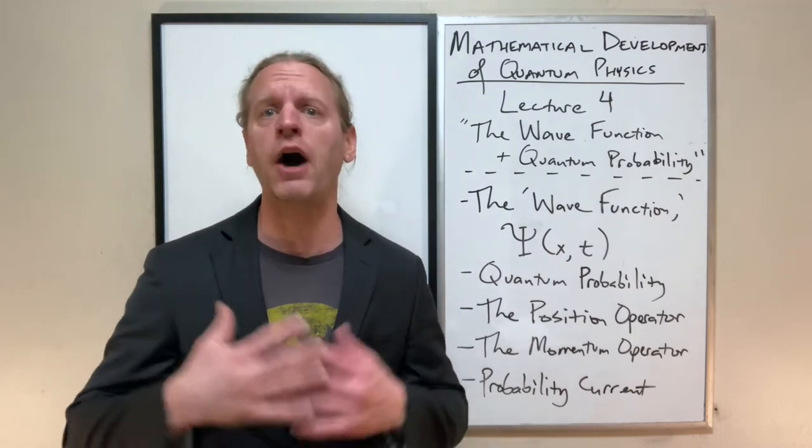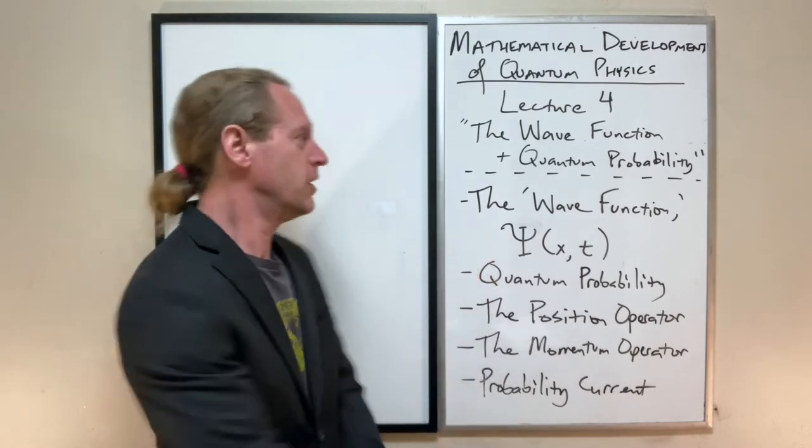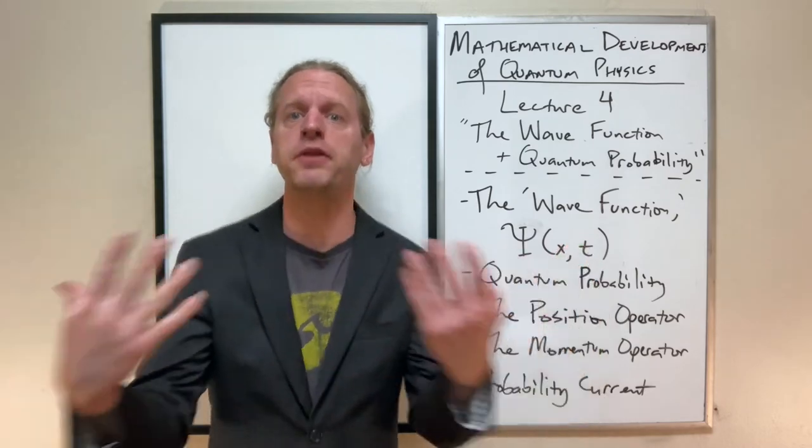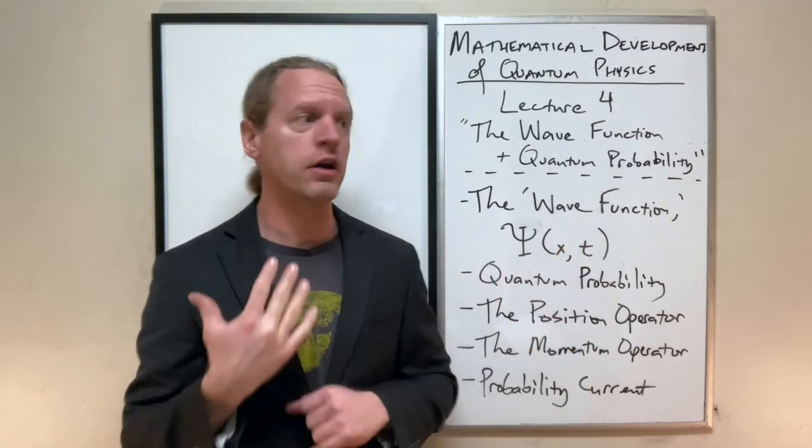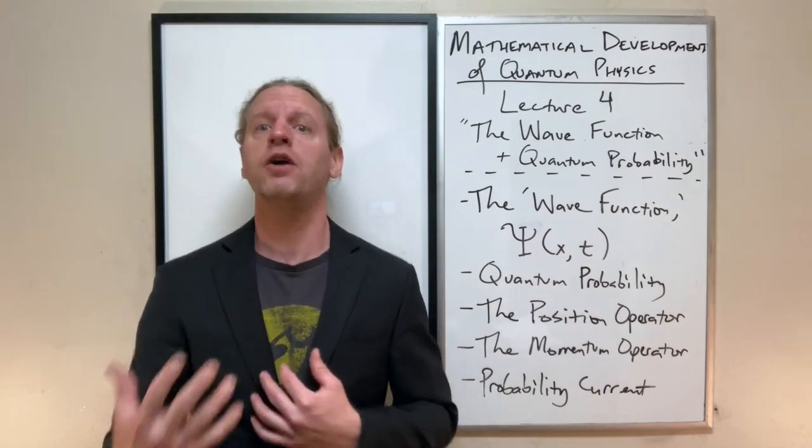we introduced kind of out of the blue, the Schrodinger equation with really no explanation and no rationale other than we wrote it on the board. So what we're going to do here today is try to put those things together to talk about what it means to actually describe probabilities of quantum systems.